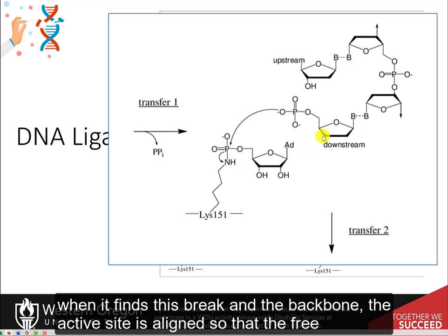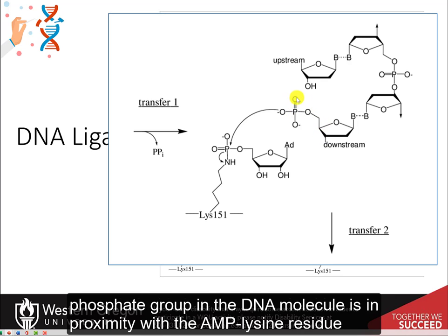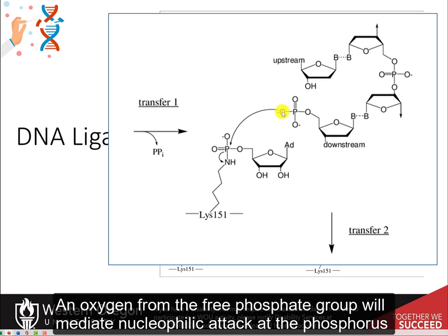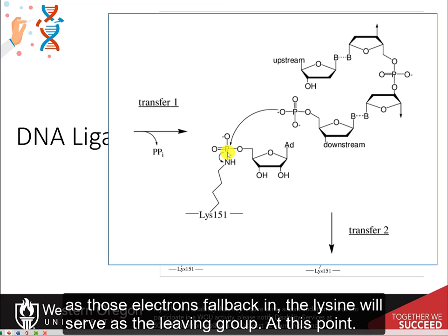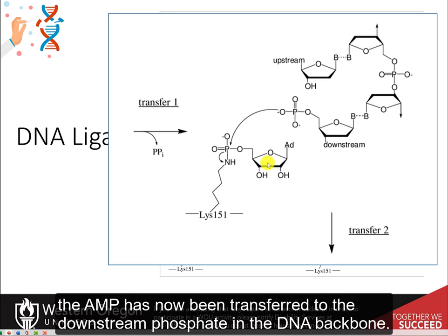As the DNA ligase is scanning the DNA and finds this break in the backbone, the active site is aligned so that the free phosphate group in the DNA molecule is in proximity with the AMP lysine residue. Oxygen from the free phosphate group will mediate nucleophilic attack at the phosphorus of the AMP lysine residue. This will again create our oxyanion intermediate, and as those electrons fall back in, the lysine will serve as the leaving group. At this point, the AMP has been transferred to the downstream phosphate in the DNA backbone.